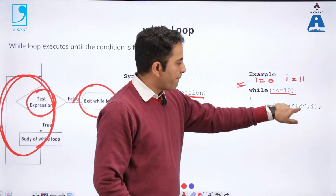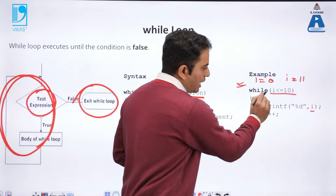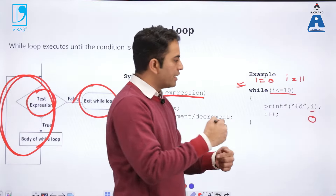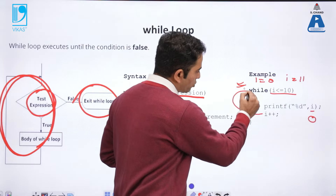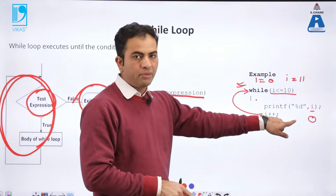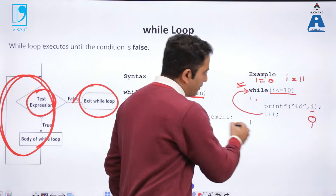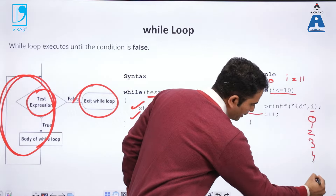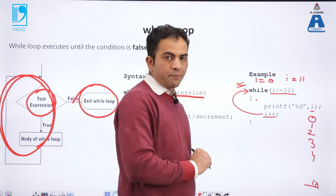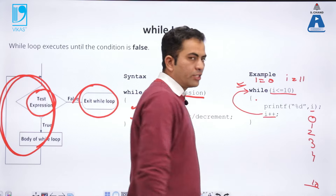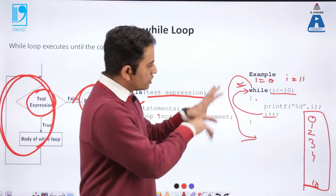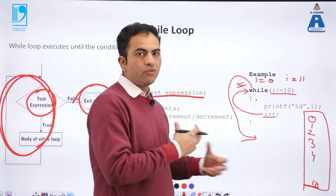While i is less than 10, printf the value of i. Initially i is 0, so it prints 0, then i++ increments i to 1. The loop goes back, checks 1 is less than or equal to 10 — condition is true — so it executes again, printing 1, 2, and so on. When we print 10, i updates to 11. Since 11 is not less than or equal to 10, the condition is false and control exits the loop. This is a simple example of how the while loop works.